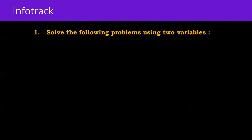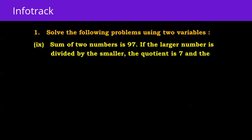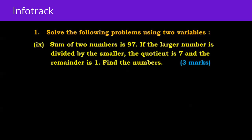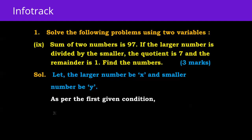Now we will start with word problems based on numbers. Question number nine: the sum of two numbers is 97. If the larger number is divided by the smaller, the quotient is 7 and the remainder is 1. Find the numbers. Let the larger number be x and the smaller number be y. As per the first given condition, x + y = 97, equation number one.